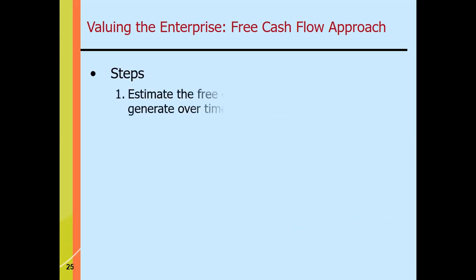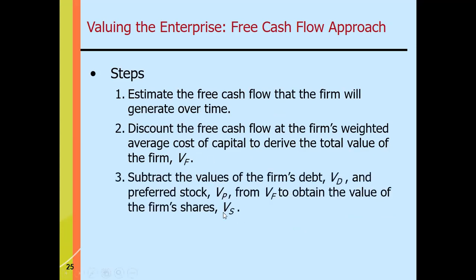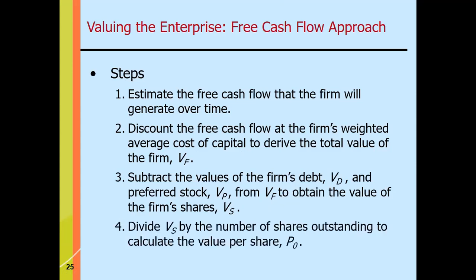Using the FCF approach: first, estimate the free cash flows the firm will generate over time. Second, discount those free cash flows at the firm's WACC to derive the total firm value V sub F. Third, to get the value of common stock V sub S, subtract the value of debt and the value of preferred stock from V sub F. Finally, divide V sub S by the number of shares outstanding to get the price per share P sub zero.